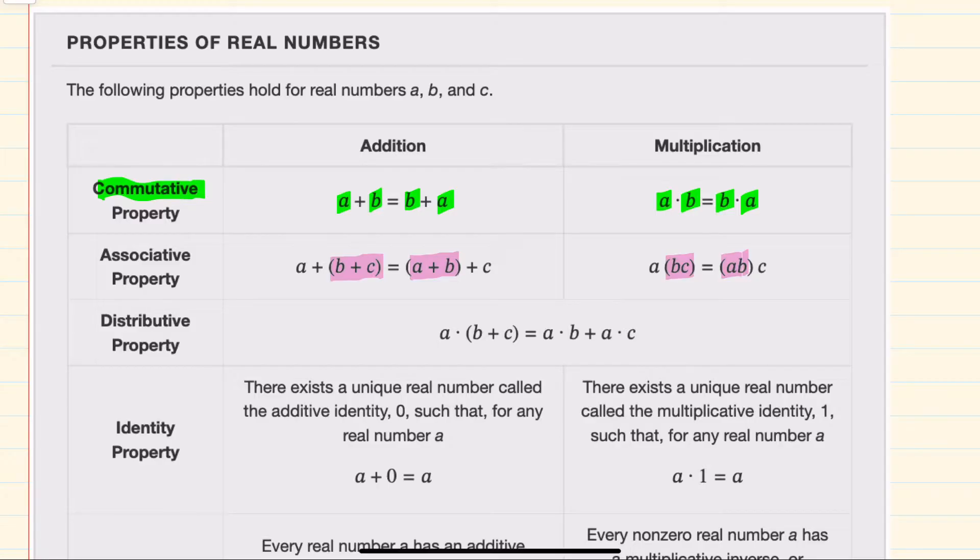Then for the distributive property, if I have a number outside being multiplied, and two numbers inside that are being added, I can distribute that multiplication here, a times b, and then also distribute that a to the second term, c, to be a times c, keeping the addition in between.